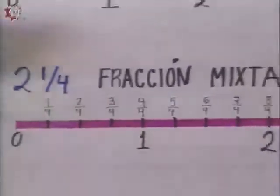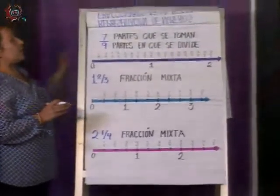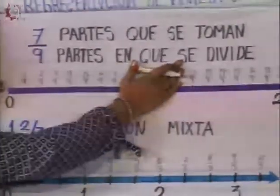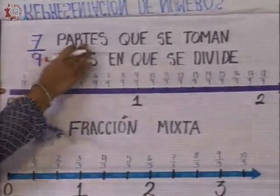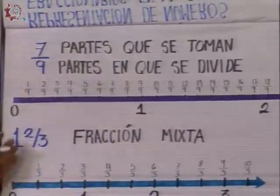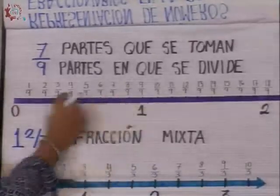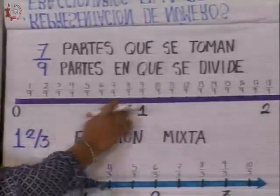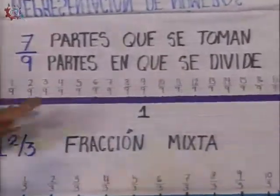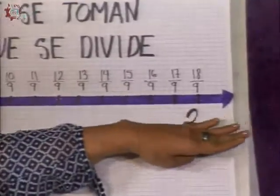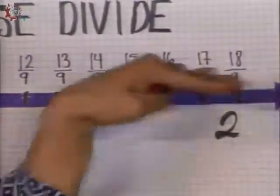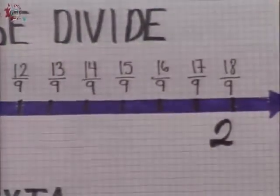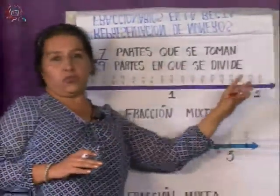Vamos a otro ejemplo. Ahora tengo el ejemplo siete novenos. Mi denominador indica en cuántas partes se va a dividir la unidad, mi numerador me indica cuántas partes voy a tomar. Entonces, mi división de cada unidad va a ser en nueve partes: un noveno, dos novenos, tres novenos, cuatro novenos, etcétera, hasta llegar a un número infinito. Cabe hacer la aclaración: en la recta numérica, una recta numérica no es finita, no tiene fin. Esta recta se puede seguir prolongando, pero yo solamente voy a tomar las partes que me están solicitando. Por eso tenemos esta flechita que indica que continúa la recta numérica.